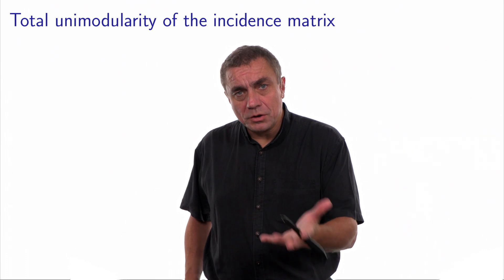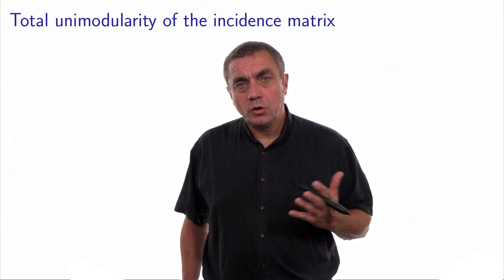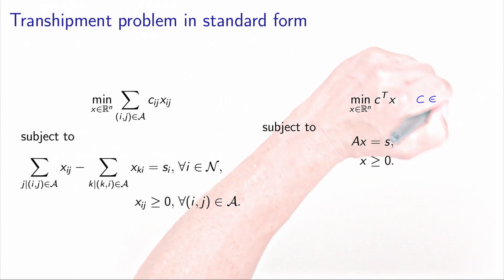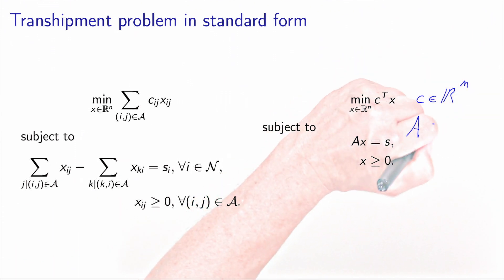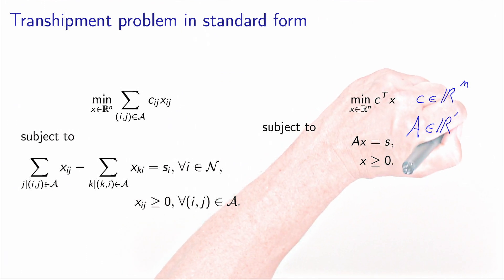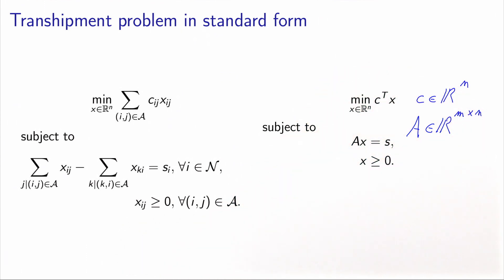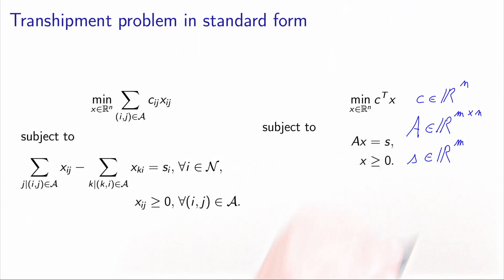The incidence matrix of a transshipment problem is totally unimodular. We consider the transshipment problem in standard form. It is characterized by the cost vector C, the incidence matrix A, which has m rows and n columns, and the supply-demand vector S, which has m entries.